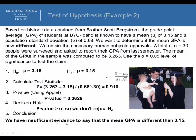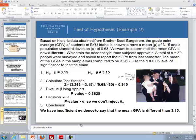In our conclusions, we always refer to the alternative hypothesis. If we reject the null, we have sufficient evidence; since we didn't reject the null, we have insufficient evidence for the alternative hypothesis. That concludes the Lesson 9 videos dealing with inference for one mean sigma unknown, primarily dealing with hypothesis testing. If you have questions, please speak to your instructor or your TAs.